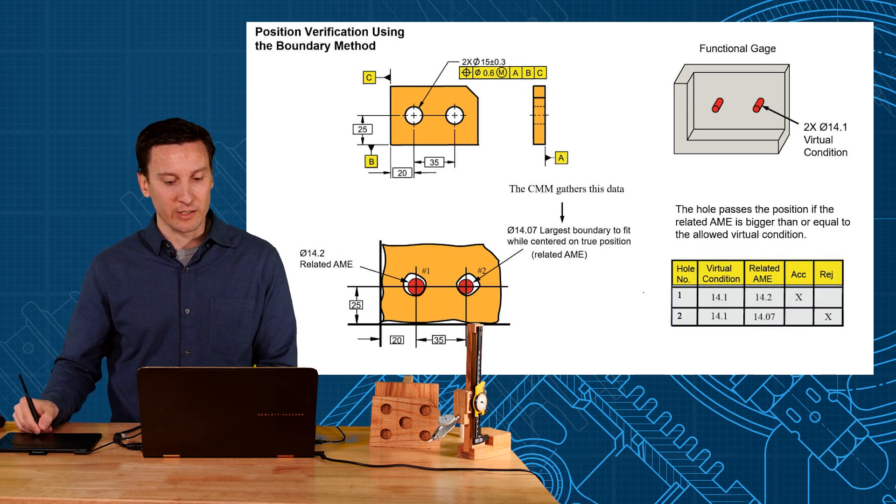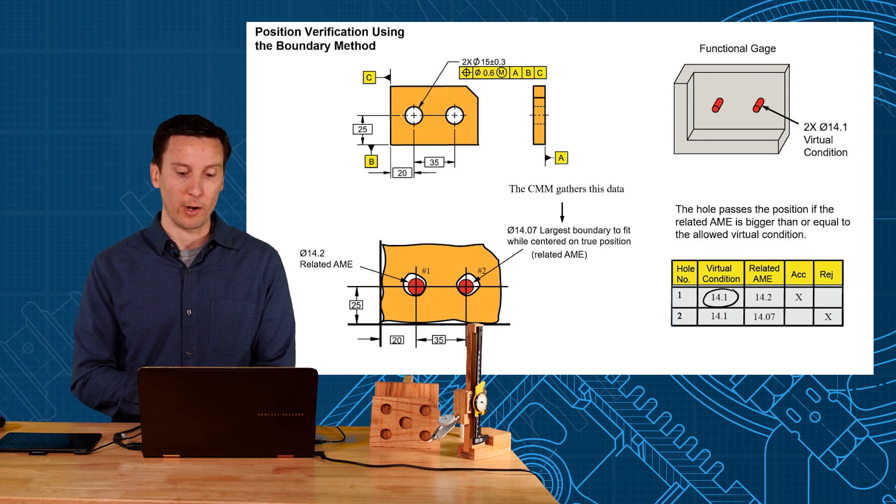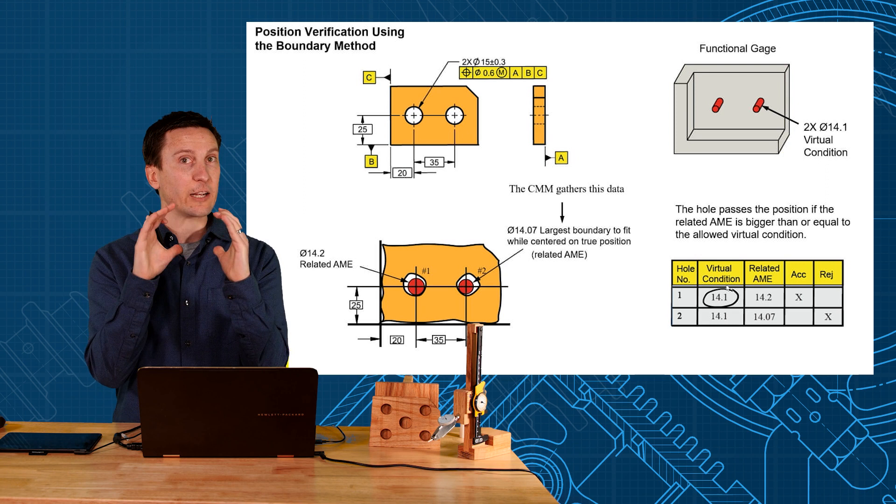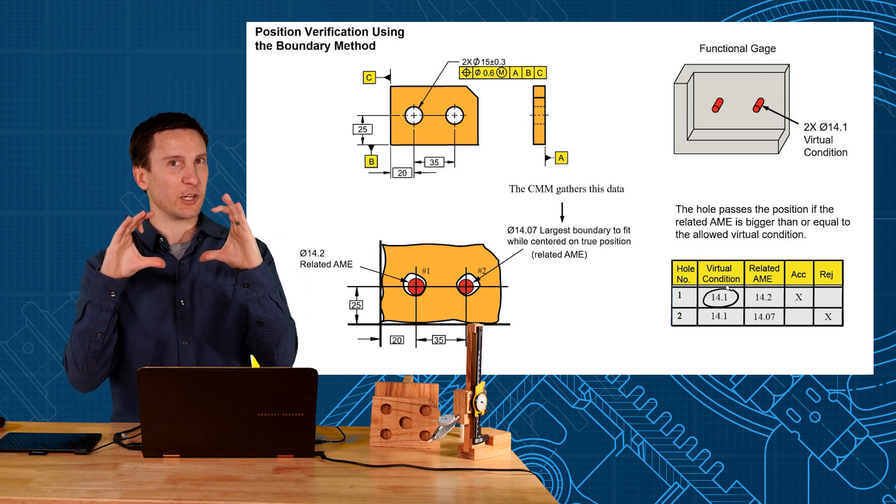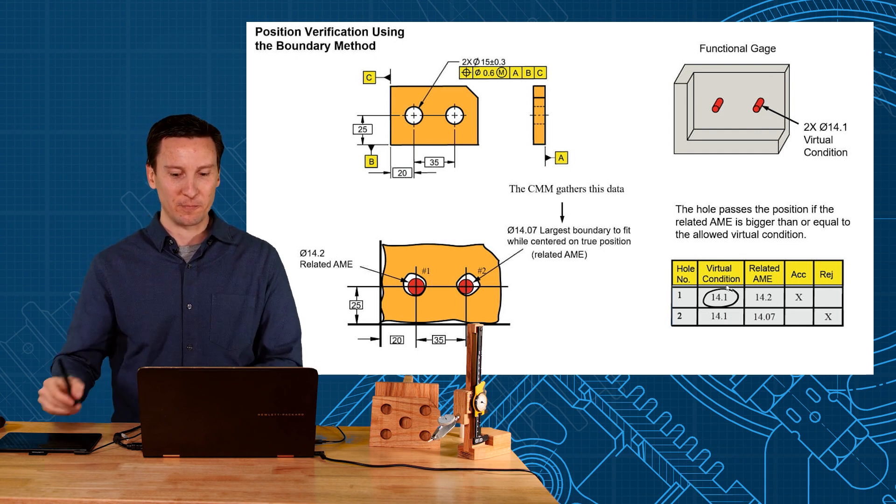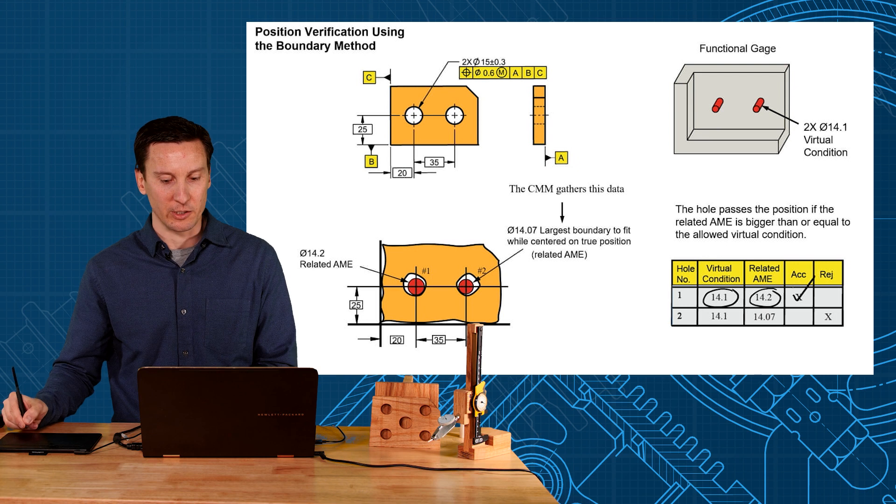So here's what an inspection report would look like. The virtual condition allowed is 14.1. And if our related actual mating envelope comes in bigger than that, that means the hole is closer to its true position, which means that it's good. So when our related AME comes in bigger, that would be good.